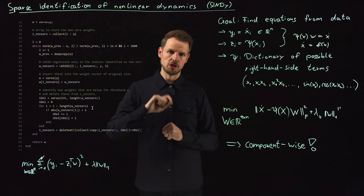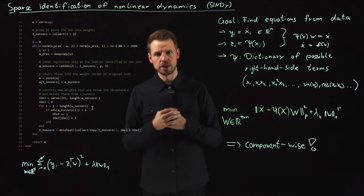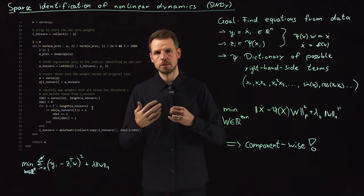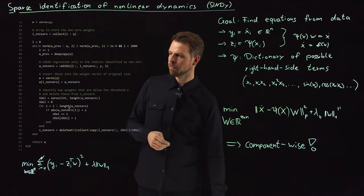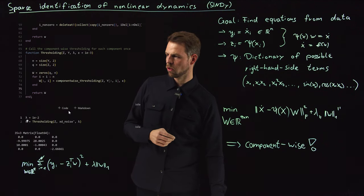Whenever you find a weight to be small in the lasso algorithm, you set it to zero and you're never touching it again. You're running lasso multiple times and using the thresholding, you eliminate weights that have been small before and never touch them again. Lasso multiple times with this thresholding is what in the end will give us the correct solution.